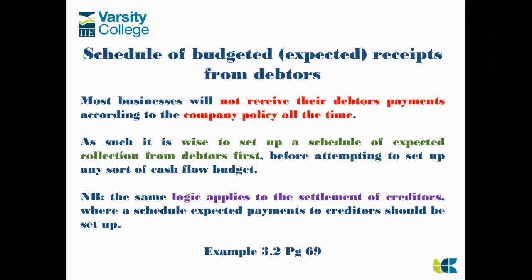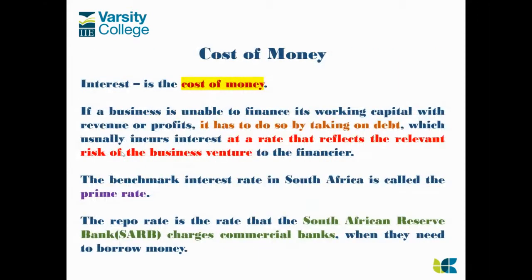These schedules won't be 100% accurate because we can't predict that every single one of our debtors is going to pay as and when. Now, interest — I don't know if we spoke about interest in Learning Unit 1 as the cost of money. I think we did. So yes, it's the cost of money. The interest rate dictated to you as a business is going to be based on the amount of perceived risk towards you by the financial institution assessing you.